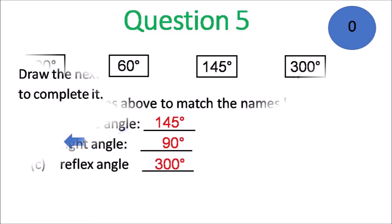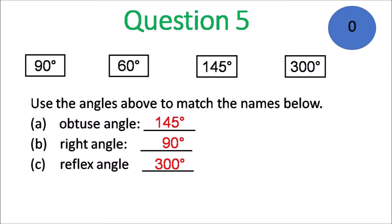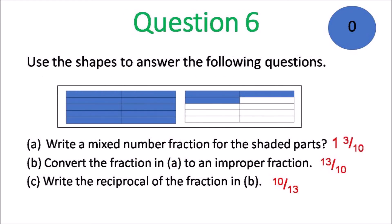Question 5. An obtuse angle in the angles would be 145 degrees. A right angle is 90 degrees and the reflex angle from the angles above would be 300 degrees. Remember obtuse is between 90 and 180. Right angle is 90. Reflex is between 360 and 180. Question 6. A, the shape is 1 and 3 tenths, that's the fraction. The improper fraction would be 13 tenths and then the reciprocal would be 10 thirteenths. You just flip it.